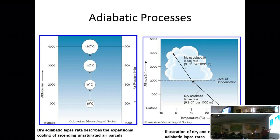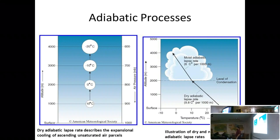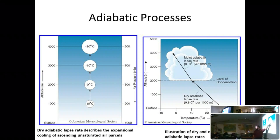The dry adiabatic lapse rate applies when there's no water vapor condensing. In that case, air cools at about 10 degrees Celsius per thousand meters. This doesn't change under any conditions — unlike the ELR, which varies with local weather. The adiabatic lapse rate only changes if condensation is occurring concurrently.